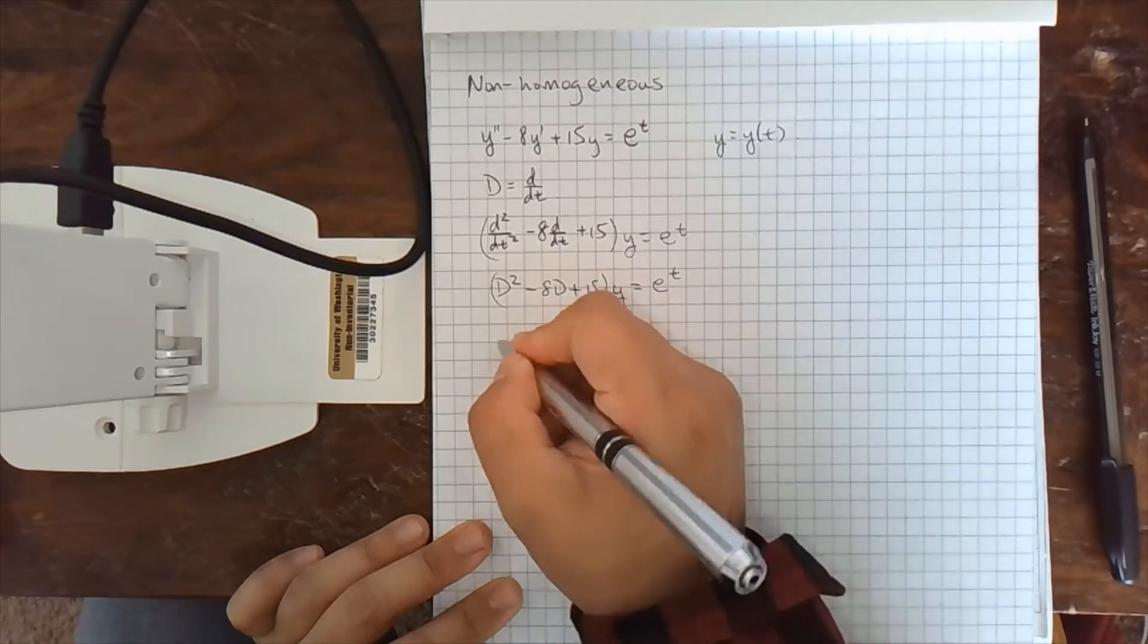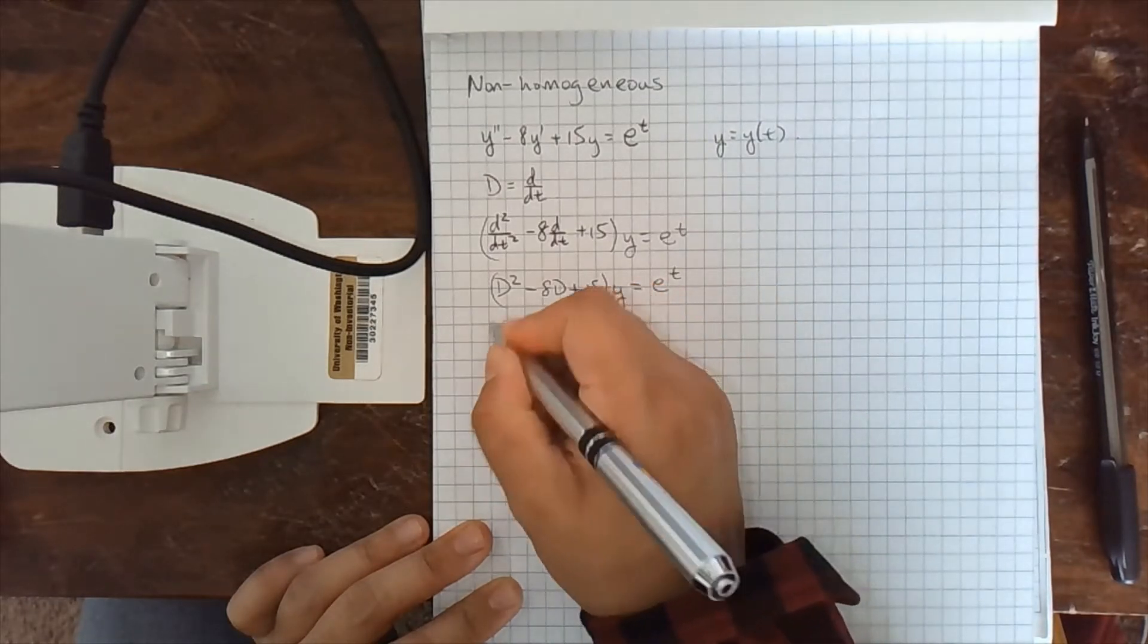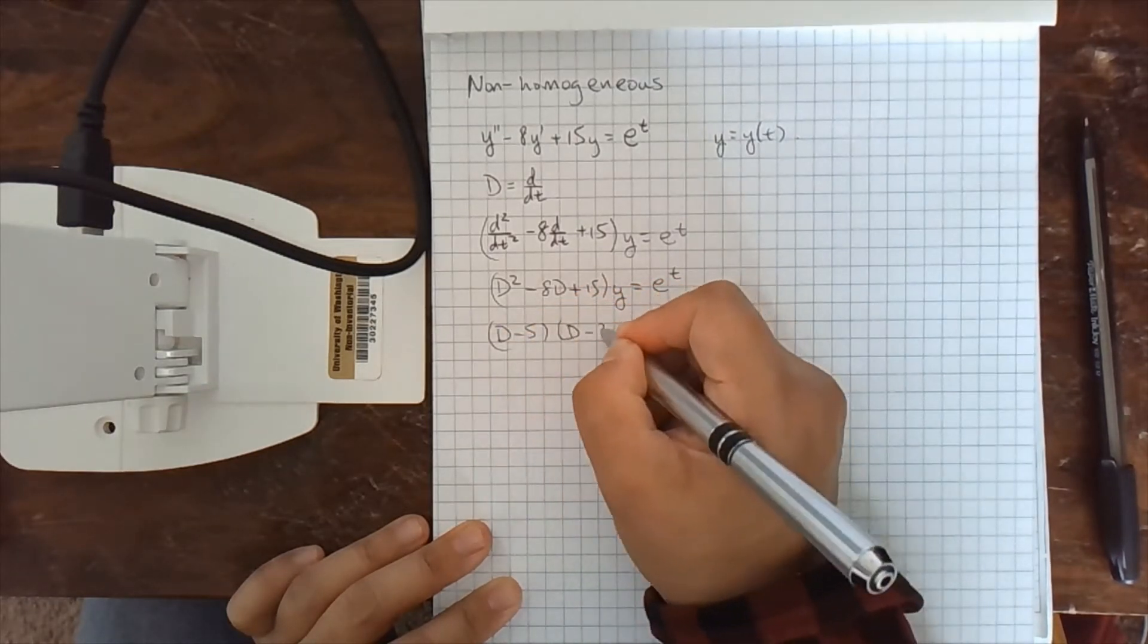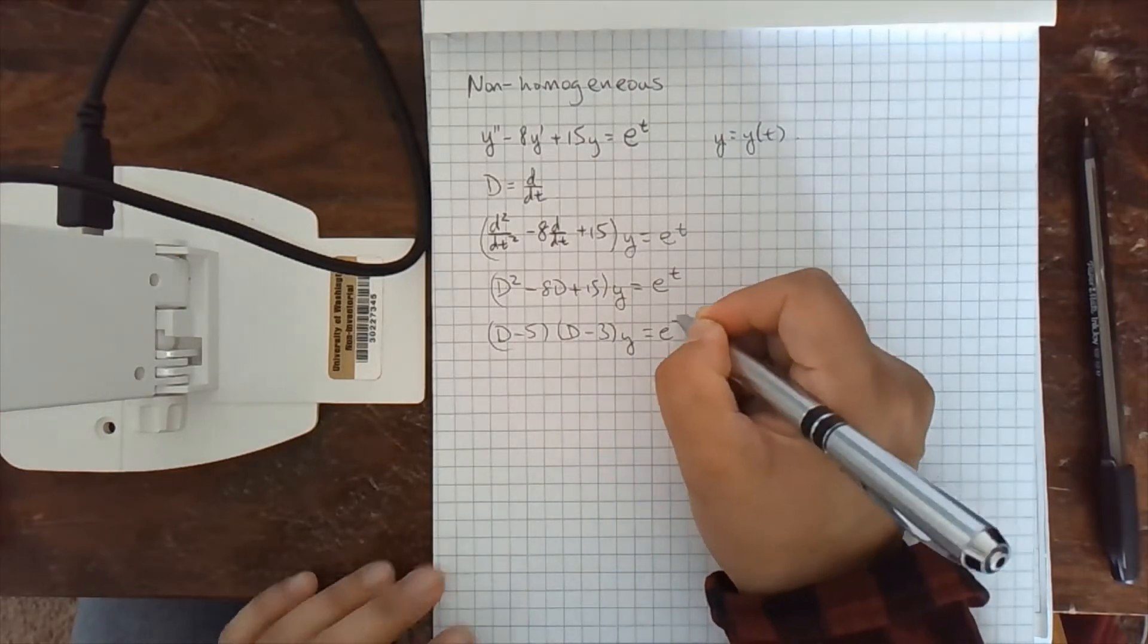So this factors because it's linear. So d minus 5 times d minus 3y equals e to the t.